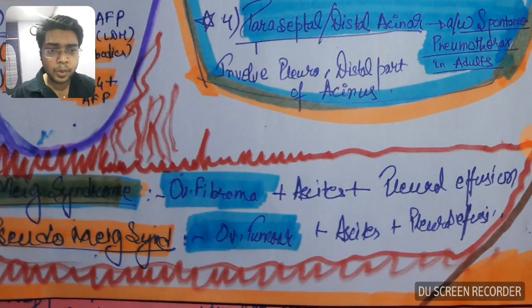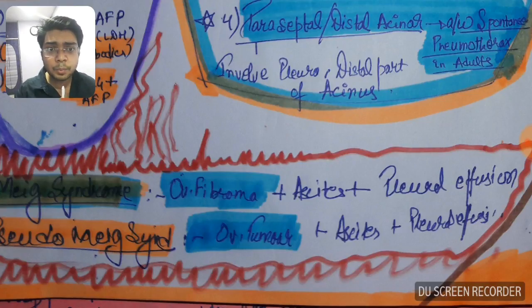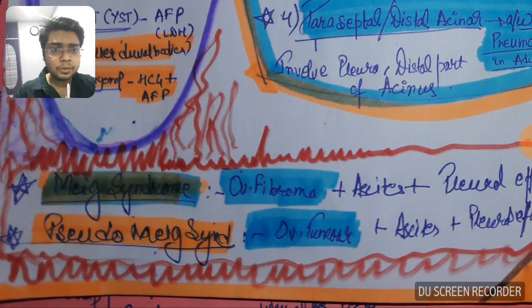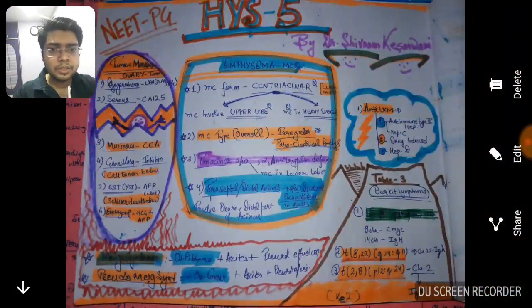In Meigs, ovarian fibroma is the characteristic, ovarian fibroma along with ascites along with pleural effusion. In pseudo-Meigs, you can find any ovarian tumor along with ascites and pleural effusion. So you must remember this: what is pseudo-Meigs and what is Meigs syndrome.